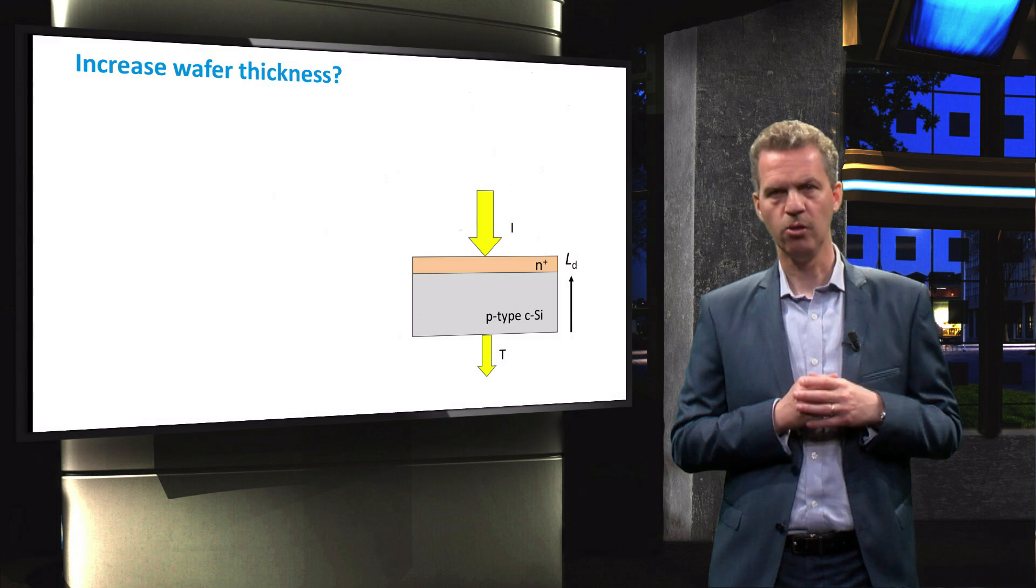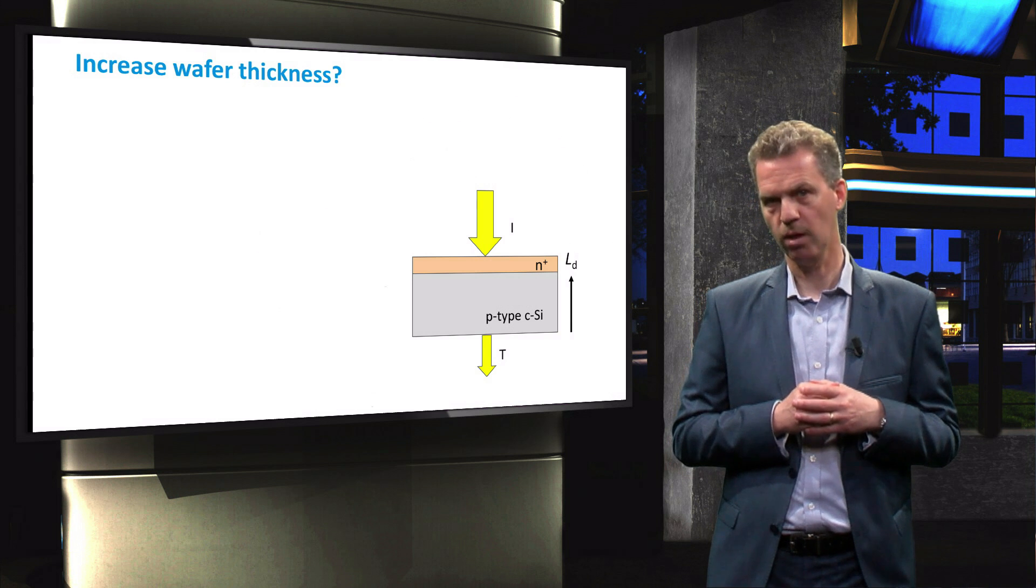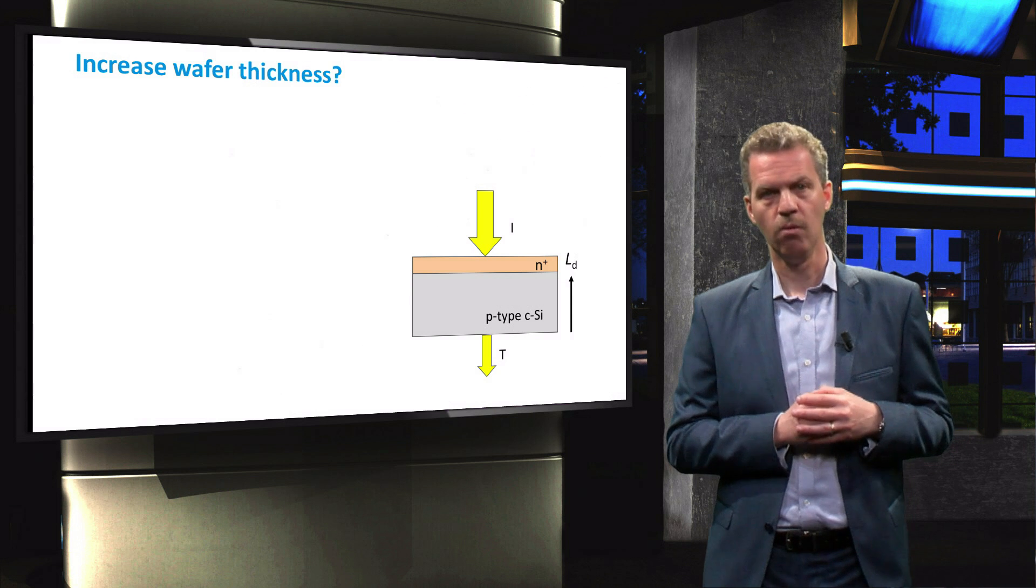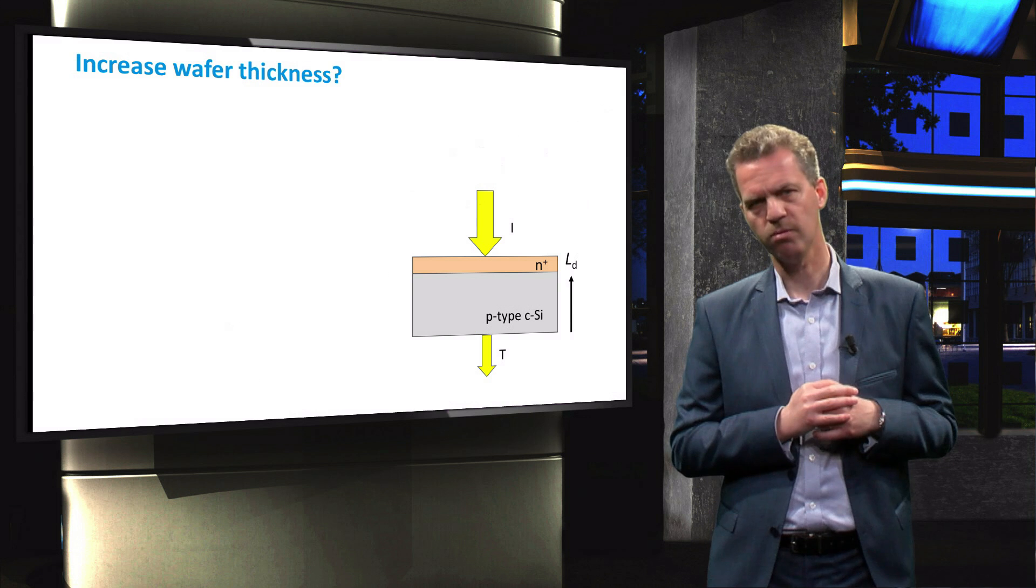The most obvious solution to this problem would be to increase the thickness of the absorber layer. In fact, one millimeter of silicon will absorb virtually all the photons up to the bandgap of silicon.